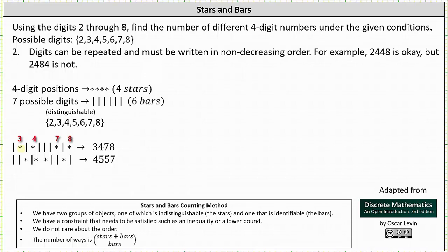Next, we have a bar indicating we switch from three to four, and then we have a star, and therefore four becomes the second digit in the four-digit number. Next, we have three bars indicating three switches: from four to five, then five to six, and then six to seven. Next, we have a star, which means we assign seven to the third digit. Next, we have another bar indicating we switch from seven to eight, and then we have the last star indicating we assign eight to the last digit. Three, four, seven, eight is a four-digit number that satisfies the condition for number two.